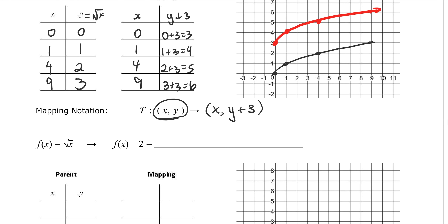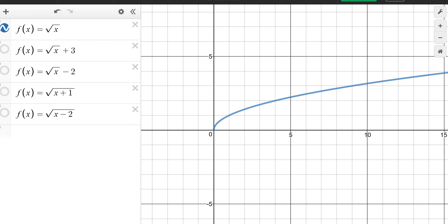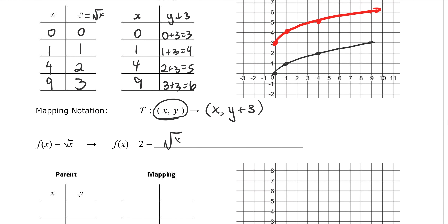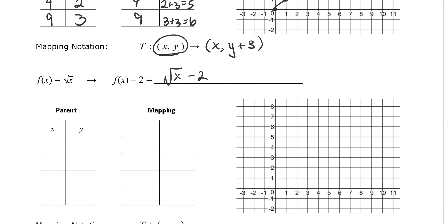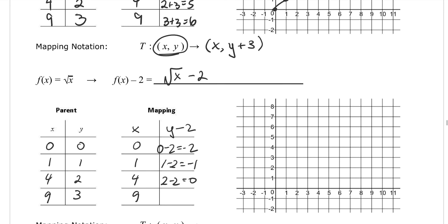Now let's look at what happens when we subtract 2. Back on Desmos, if I take the base function and subtract 2 — the square root of x minus 2 — the graph goes down. The y values are going to decrease by 2; x values don't change. So we keep x values 0, 1, 4, 9. Writing out the parent function again, and mapping to the new function: y values all decrease by 2. So 0−2=−2, 1−2=−1, 2−2=0, and 3−2=1.